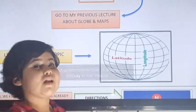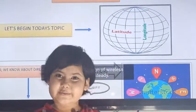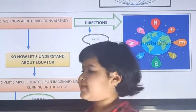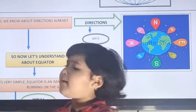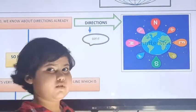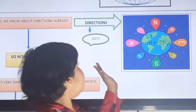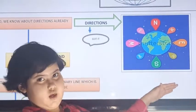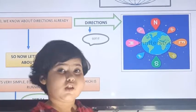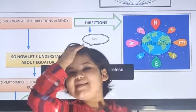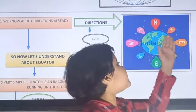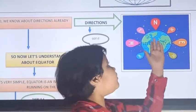What is latitude and longitude? So we know about directions. This is a globe, and a globe has some directions. The directions are west, east, south, and north.